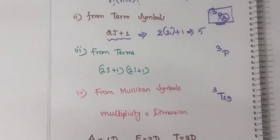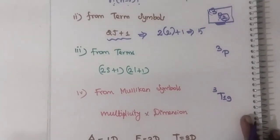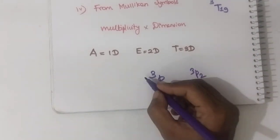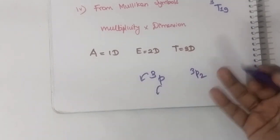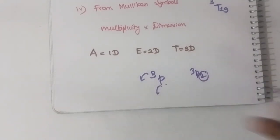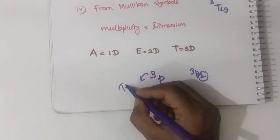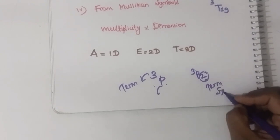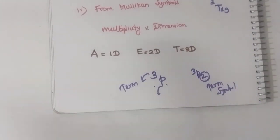Suppose if they provide you with a term - what is the difference between a term and a term symbol? It is very simple. If you have J, then it is known as a term symbol. But if you don't have J, it is known as a term. For example, 3P is a term, whereas 3P2 is a term symbol. The subscript 2 is J. If it doesn't have a J value, it is a term; if it has a J value, it is a term symbol.